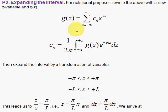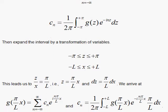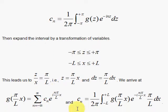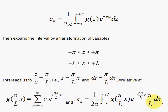Now we substitute in two places for the first equation: z as the argument and z in the exponent, giving π over l times x in both spots. For the equation with c sub n, g of z becomes g of π over l times x, and z in the exponent becomes π over l times x. And dz is equal to π over l dx.